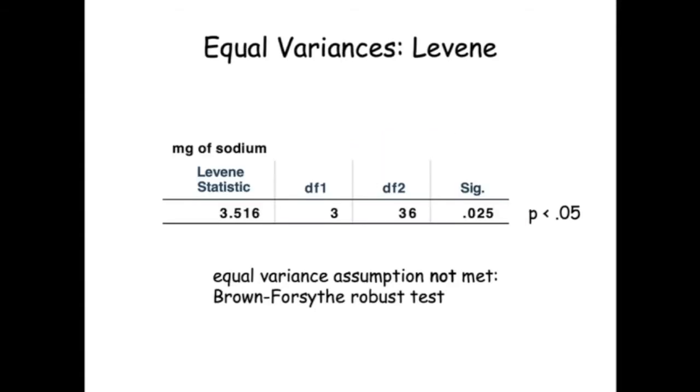The Levine test p-value is less than .05, so we cannot assume equal population variances. Therefore, we use the Brown Forsyth test.